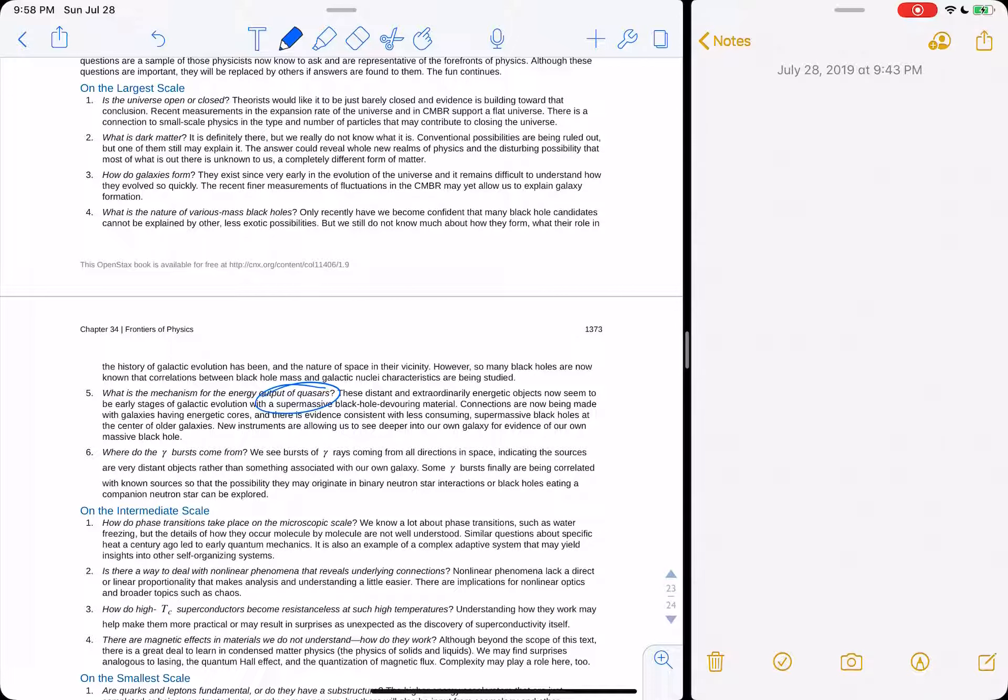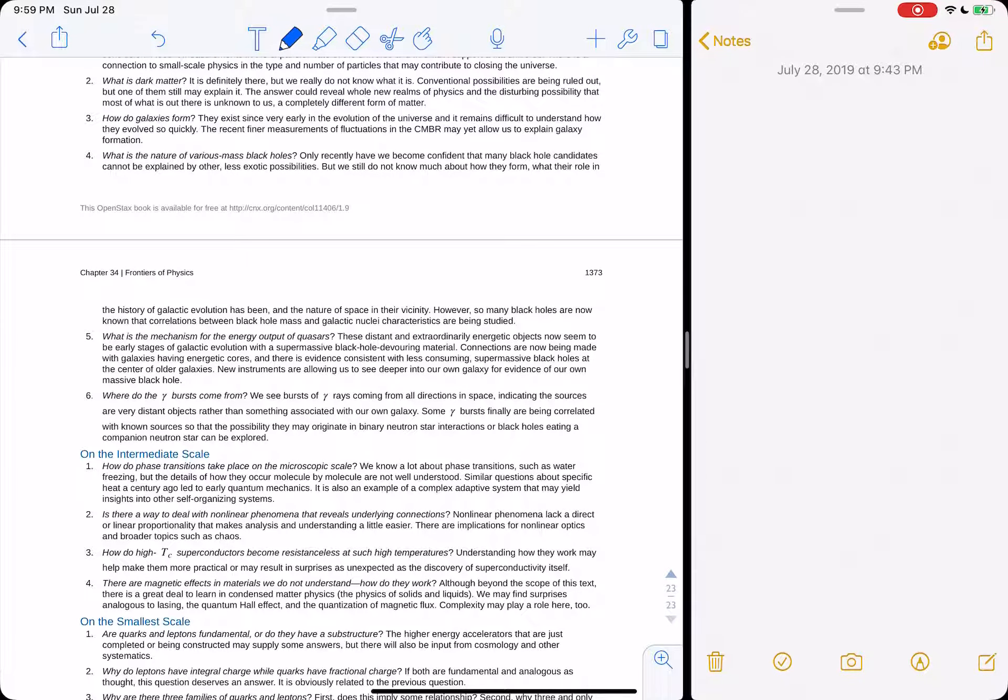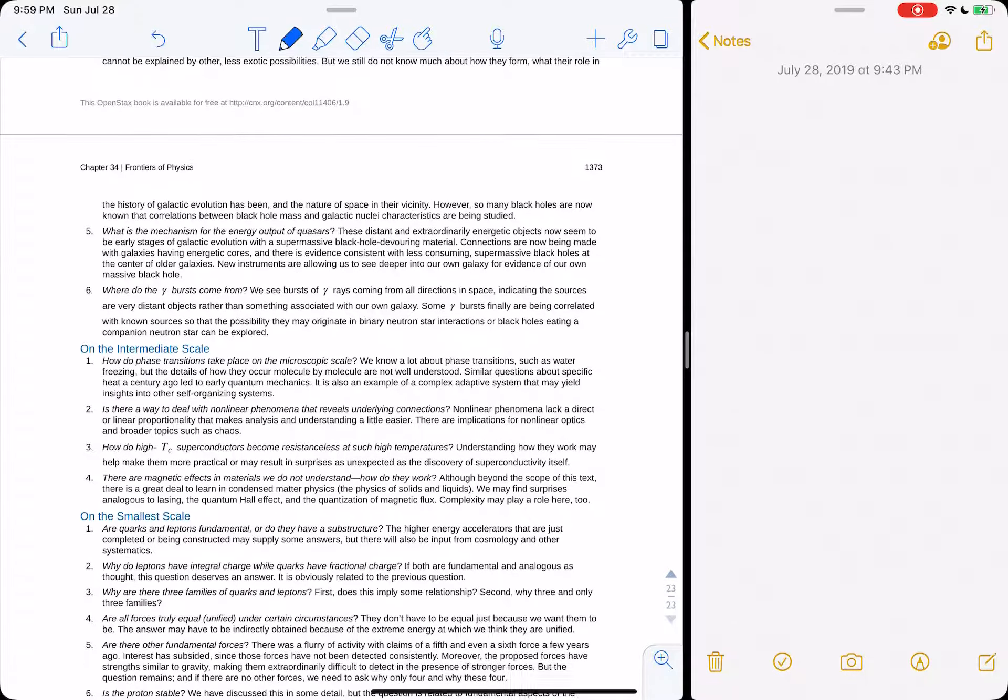Quasars, what is the mechanism for energy output? So quasi-stellar radio objects or quasi-stellar radio sources, these are black holes with an accretion disk. And so that's what we think a quasar is, it's just a black hole with an accretion disk. And what that means is like a black hole with rings like Saturn and its magnetic fields can accelerate particles to high energies. Gamma ray bursts, GRBs, come from supernovas exploding. So five and six have been answered since this textbook was written in the last few years, which is kind of cool.